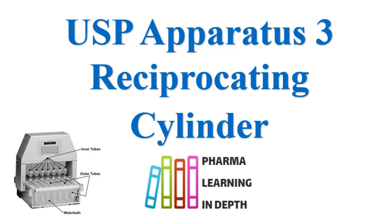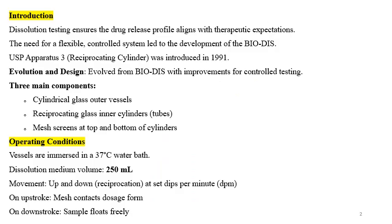Also, the basket type apparatus is used. This video is about USP apparatus 3, which is called the reciprocating cylinder apparatus, and it has some unique features.